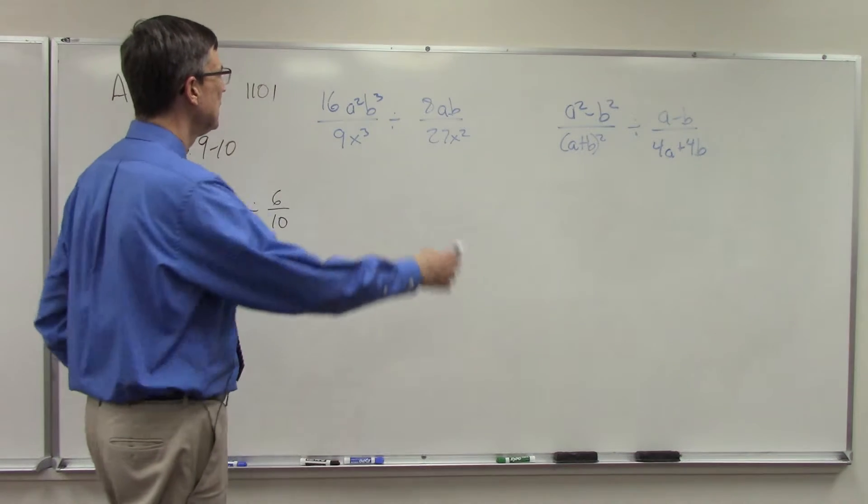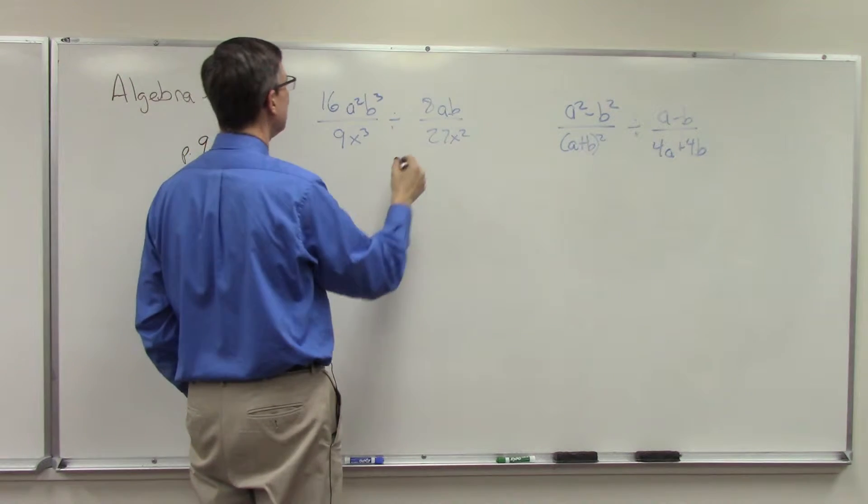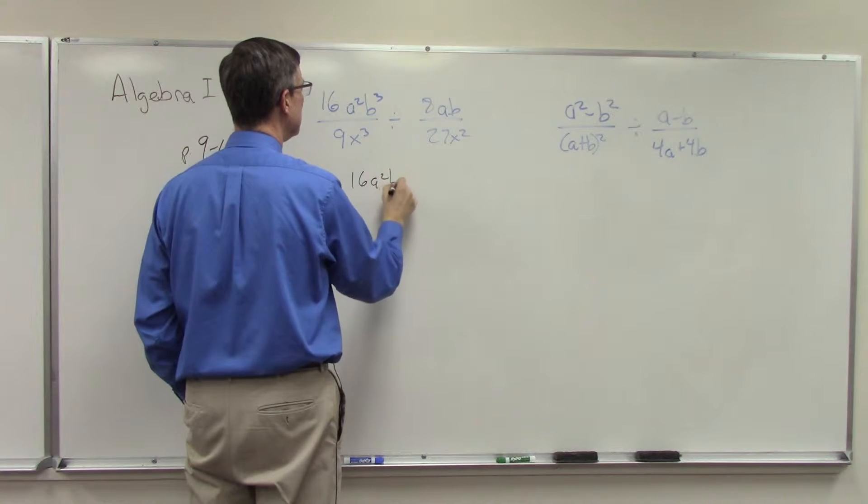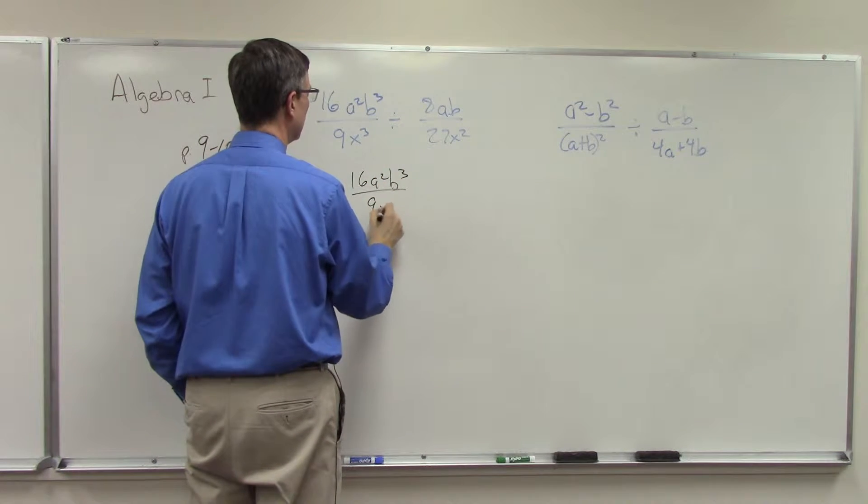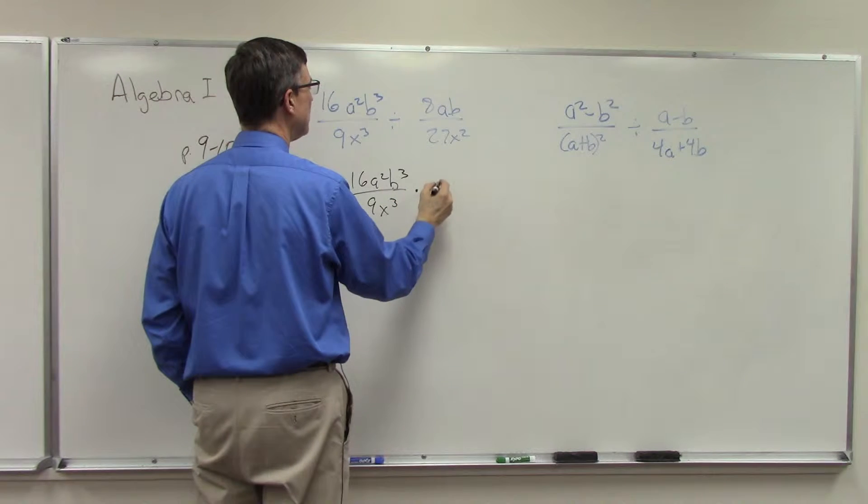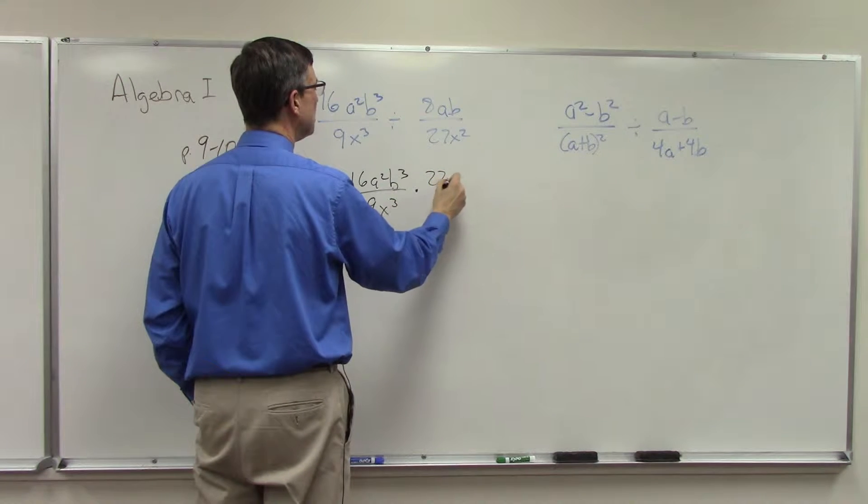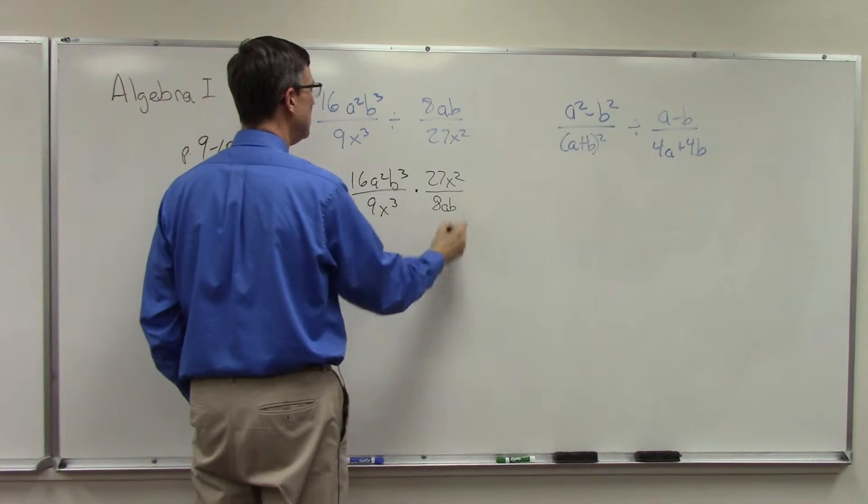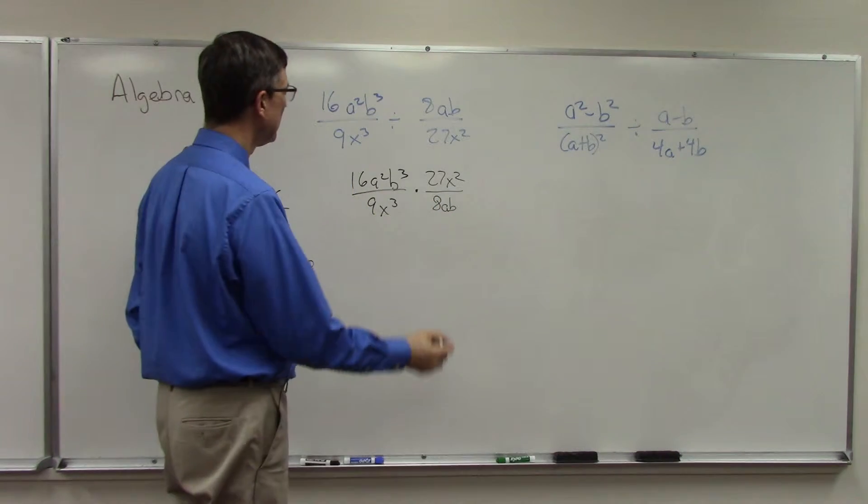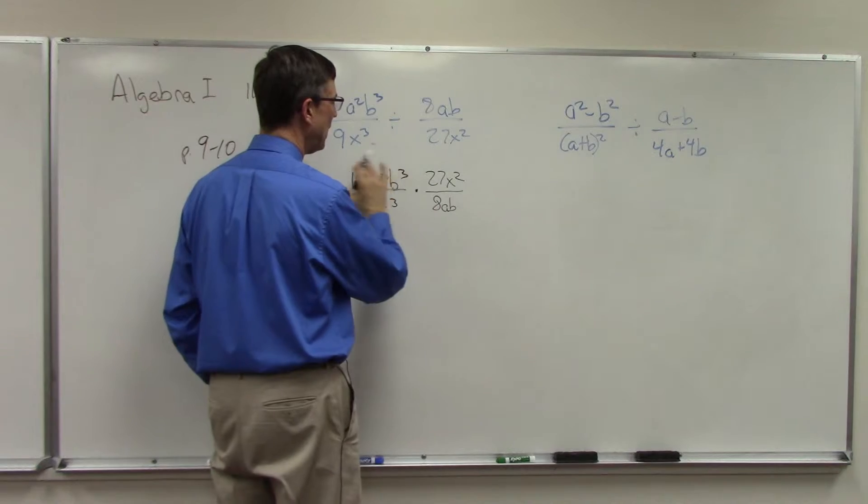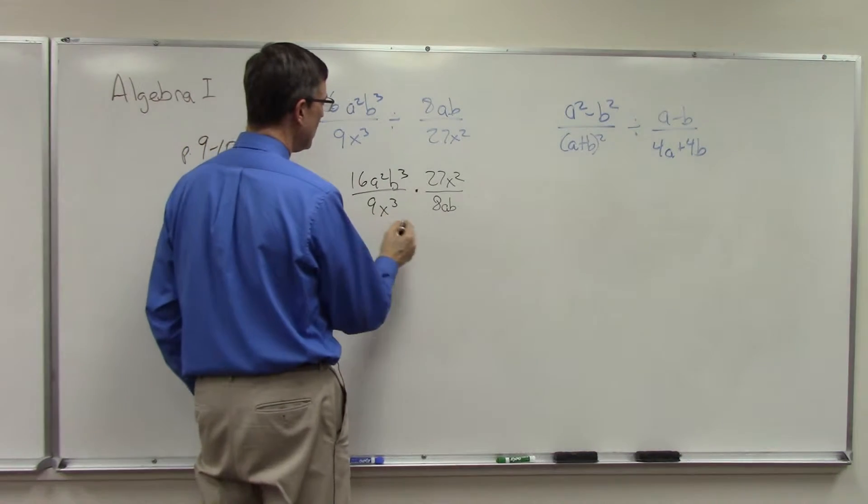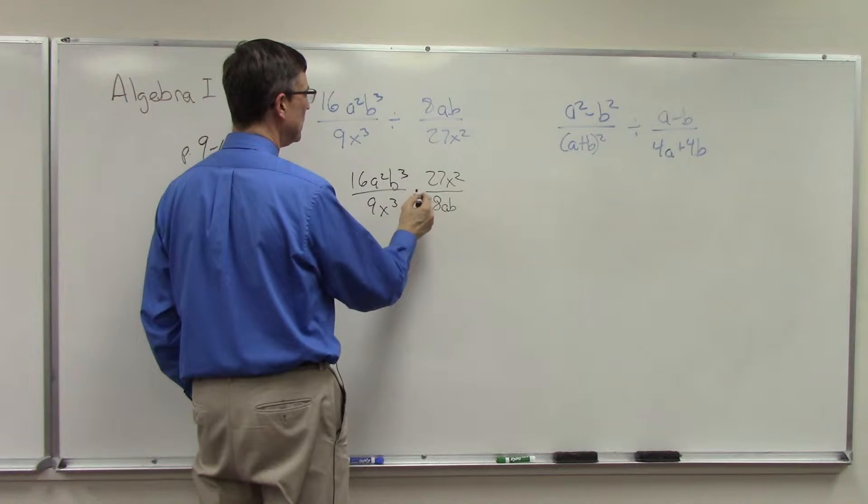So let's take this problem right here. In order to solve this, I'm going to keep this the same, but I'm going to multiply by flipping this upside down: 27x² over 8ab. Now I can look anywhere from top to bottom to see what will cancel.